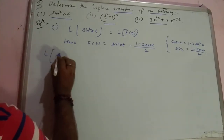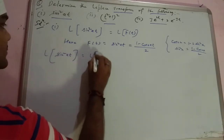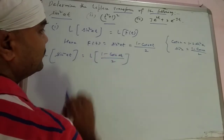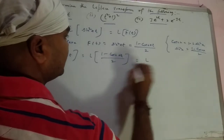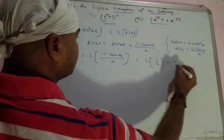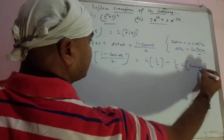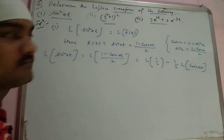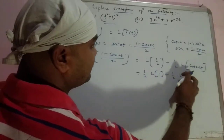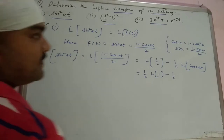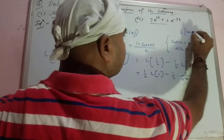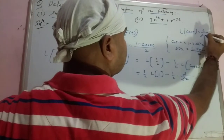So L of sine square at equals Laplace of (1 minus cos 2at) upon 2. This gives us 1 by 2 Laplace of 1 minus half Laplace of cos 2at. Laplace of 1 is 1/s, and Laplace of cos at is s upon s squared plus a squared, so Laplace of cos 2at is s upon s squared plus (2a) squared.